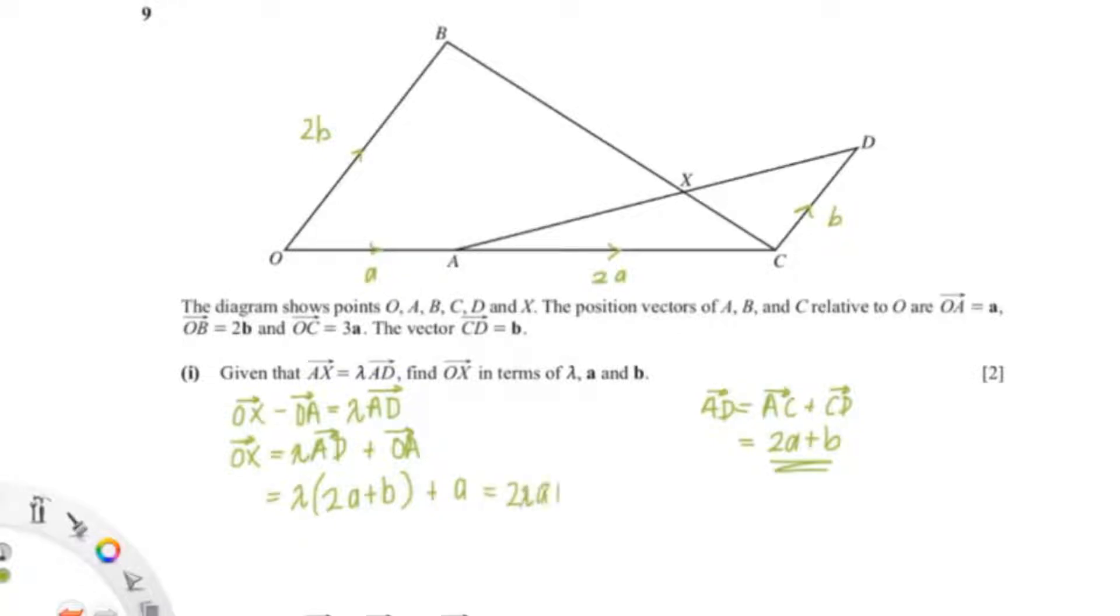Now I'm just going to expand it giving me 2 lambda A plus lambda B plus A. Now I'm going to factorize it back. So that would be lambda B plus A bracket 2 lambda plus 1.